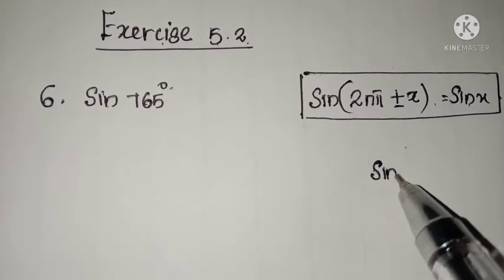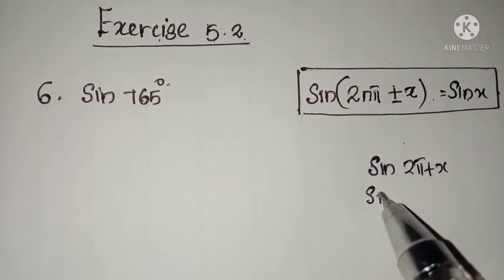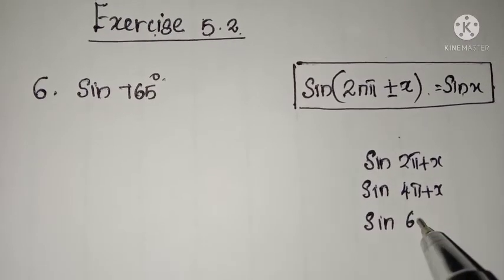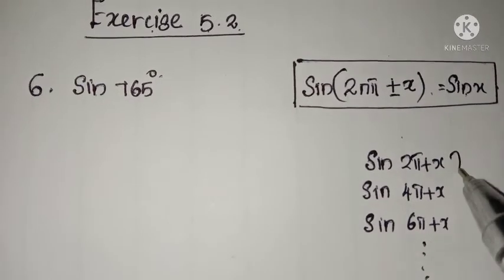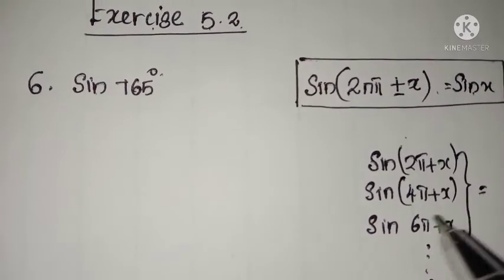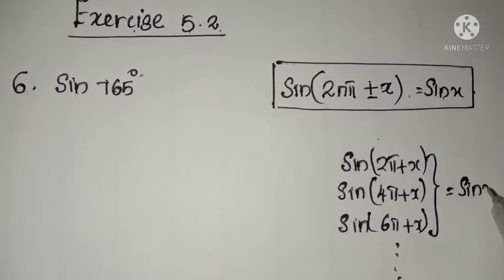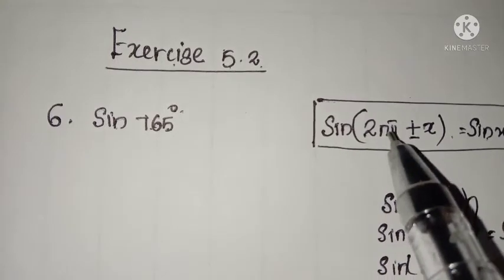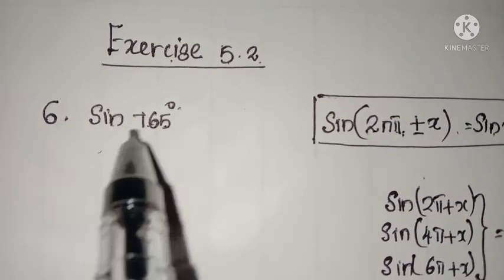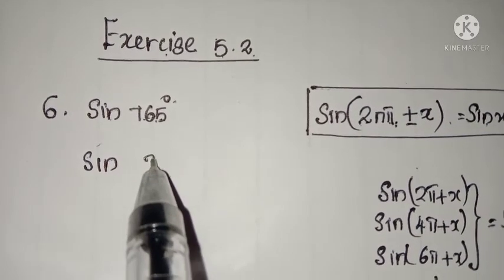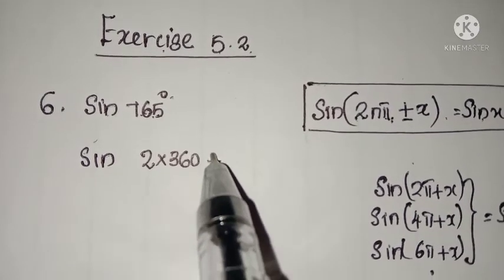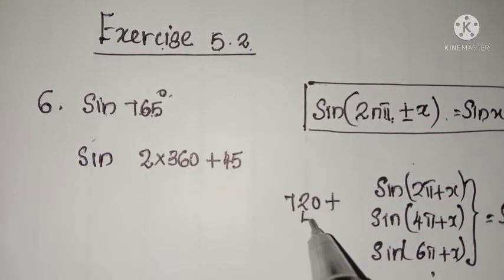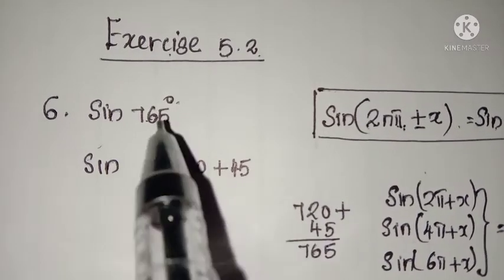If we put n=1 we get sin(2π + x); n=2 gives sin(4π + x); n=3 gives sin(6π + x), and so on. For all these values, sin of that angle is always equal to sin(x). So convert 765° in terms of 2π. Since 2π means 360°, we can write 765 = 2×360 + 45, because 2×360 = 720 and 720 + 45 = 765.